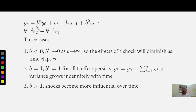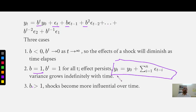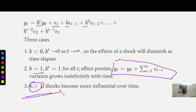If b is less than 1 — say b is 0.5 — then 0.5, 0.5 squared, 0.5 cubed — the shock will die out. If b is 1, the shock will not die out. Y1 will be y0 plus epsilon 1; y2 will be y0 plus epsilon 1 plus epsilon 2; y3 will be y0 plus epsilon 1 plus epsilon 2 plus epsilon 3. Those shocks are carried forward as-is — there is no shock-absorbing capacity. b greater than 1 is not a common phenomenon in social sciences; it is an explosive process studied in diffusion and fusion reactions, but not under consideration in our course.